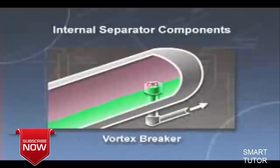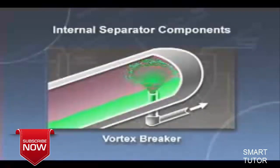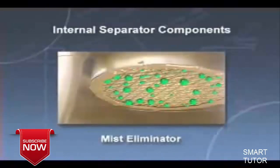A vortex breaker keeps vortexes from developing when the liquid control valve is open, thus preventing gas from being drawn out of the vapor space and re-entrained in the liquid outlet. Mist eliminators coalesce and collect small liquid drops from separated gas before the gas leaves the vessel.